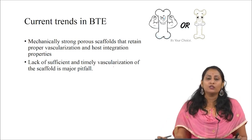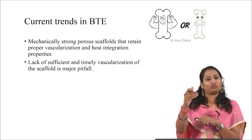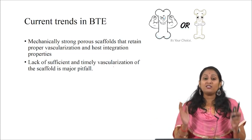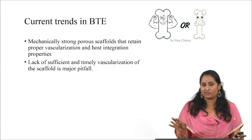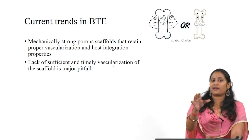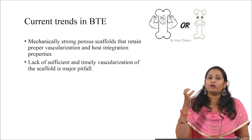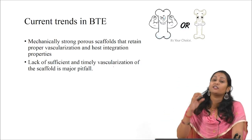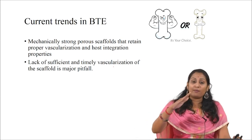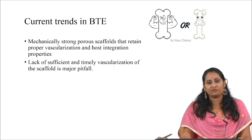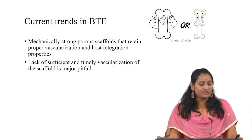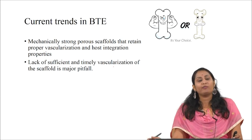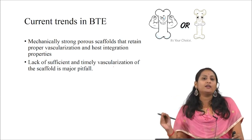Current trends in bone tissue engineering show increased interest in developing mechanically strong porous scaffolds that retain proper vascularization and osseointegration. The major pitfall is the lack of sufficient and timely vascularization — when a scaffold is placed, vascularization must penetrate deep into the construct, not stop at the upper layer. Failures occur because of this issue, making vascularization a critical strategy for successful bone graft materials.